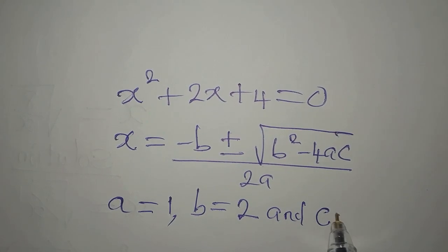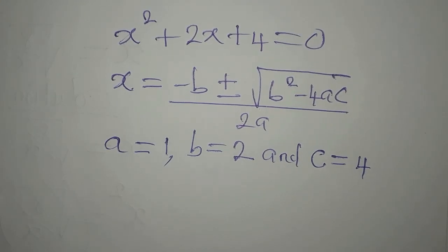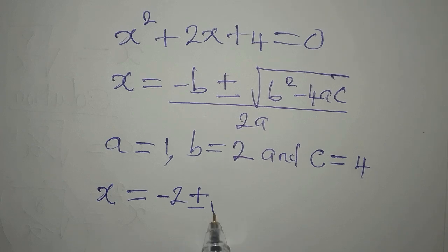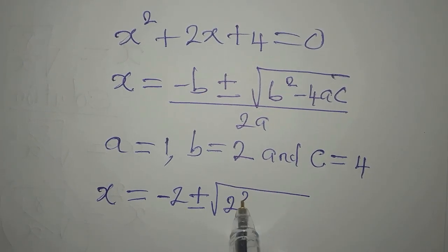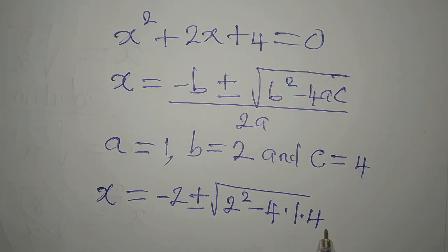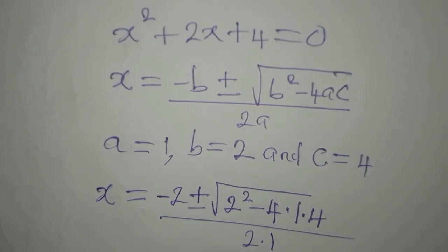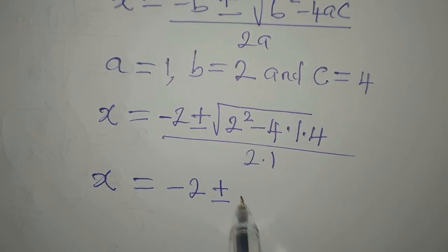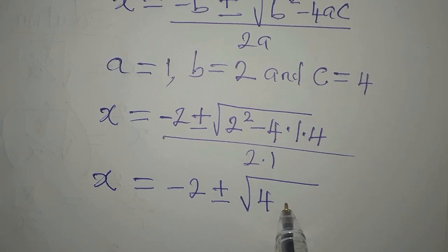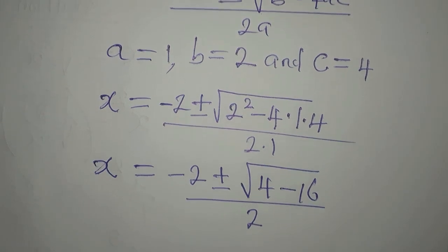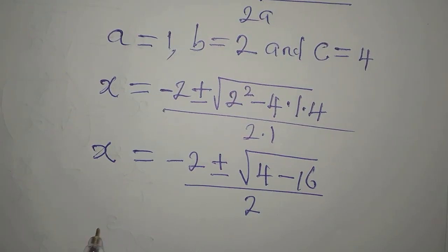And c is the constant, which is 4. Now we put everything into the formula: x equals negative 2, plus or minus the square root of 2 squared minus 4 times 1 times 4, divided by 2 times 1. Continuing: x equals negative 2 plus or minus the square root of 4 minus 16, divided by 2.